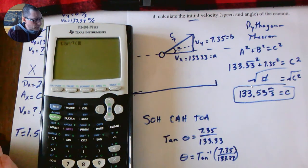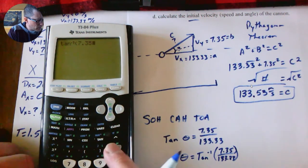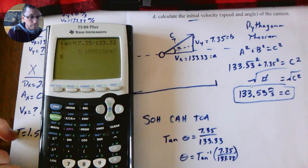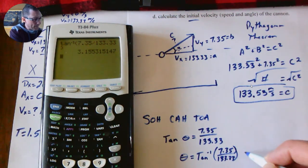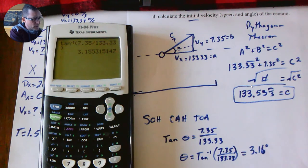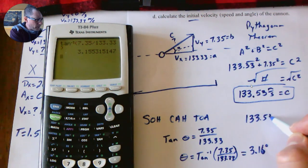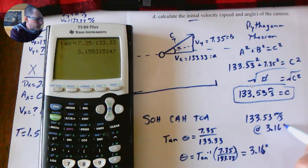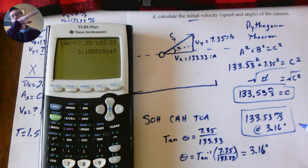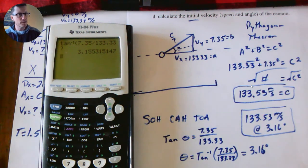So tangent—and that's the angle I get. I'm going to round it, so our final answer will be 133.53 meters per second at an angle of 3.16 degrees. That's the actual speed when the cannonball comes out of the cannon and the angle. It's almost horizontal but just a little bit up.